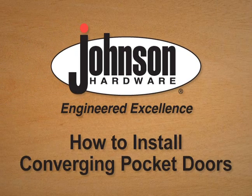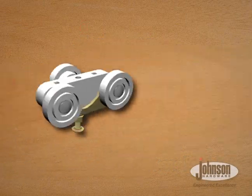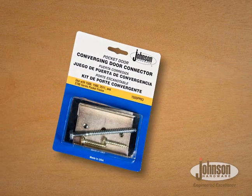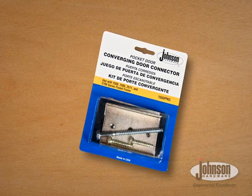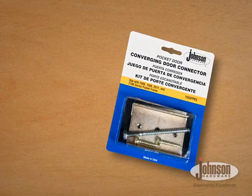The Johnson Hardware Pocket Door Frames deliver jump-proof operation with the track's box design and smooth-rolling tricycle hangers. The Johnson Hardware 1555 Converging Pocket Door Kit connects two pocket door frames to create beautiful and dynamic entryways.